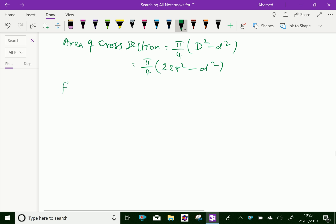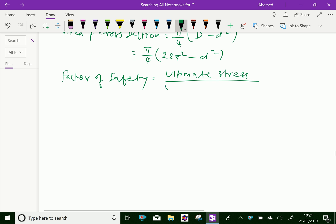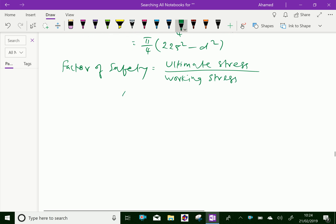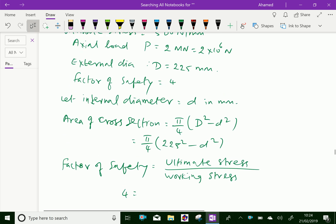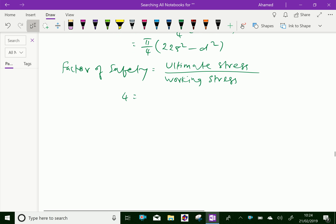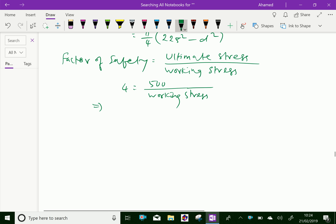Factor of safety we know that: Factor of safety equals ultimate stress over working stress. Therefore, 4 equals 500 over working stress. Therefore, working stress equals 500 by 4, which is equal to 125 newton per mm squared.